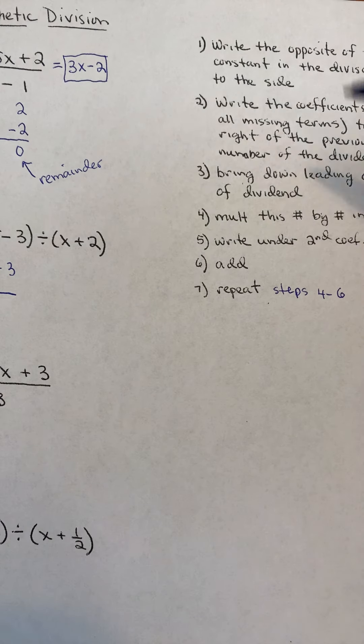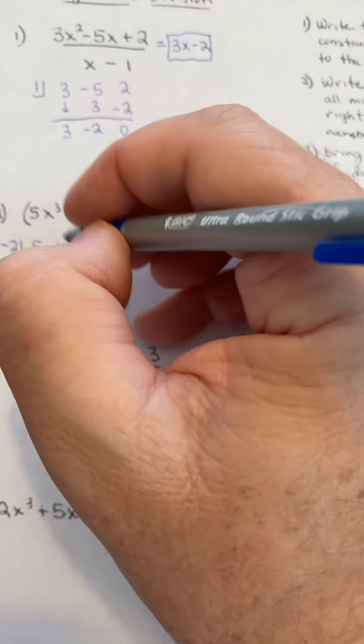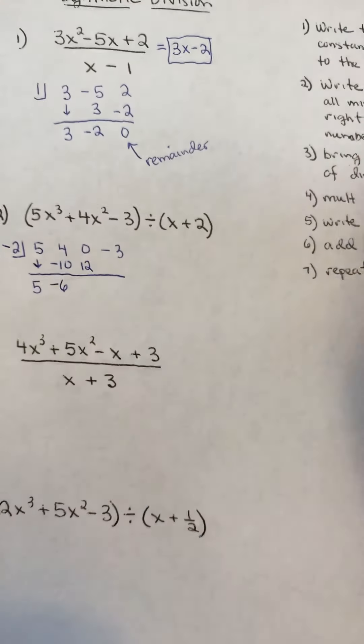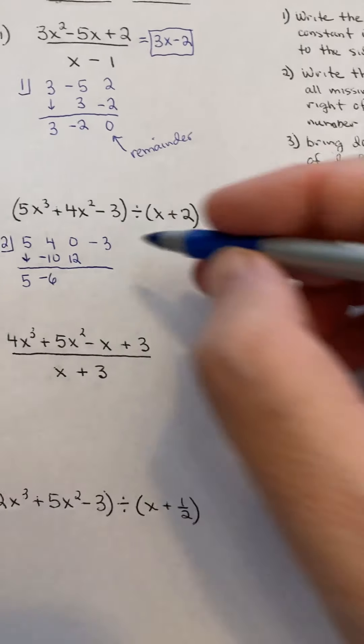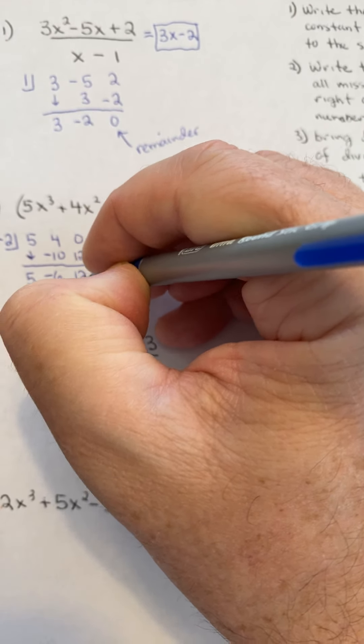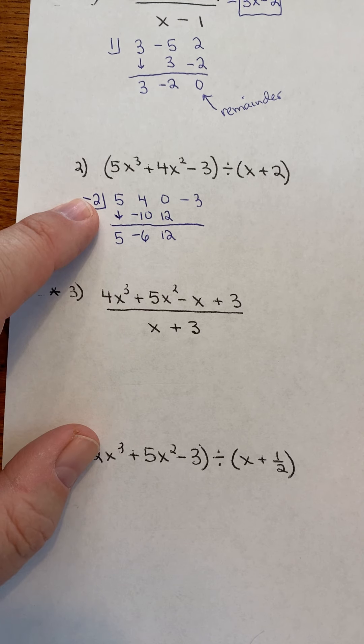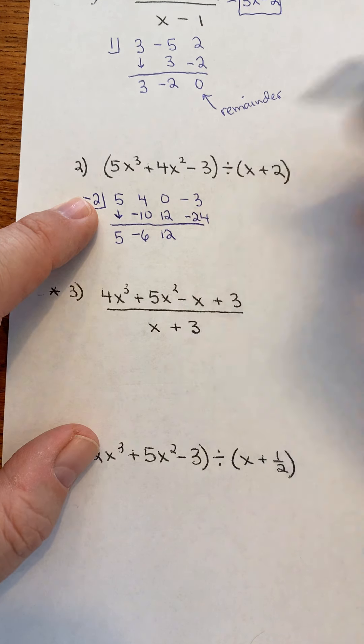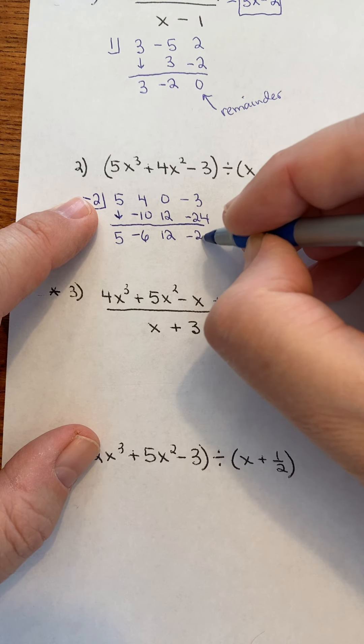Great. So, multiply this number by the number in step 1. So, I take this negative 6 times the negative 2, which is a positive 12. Add these up. Add those up. Then, multiply by the number over here. That would be negative 24. Add these up. That's a negative 27.